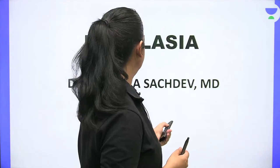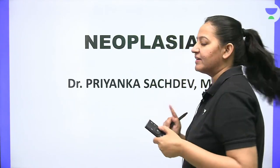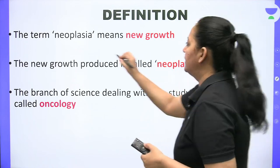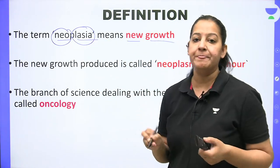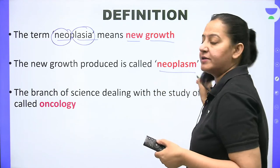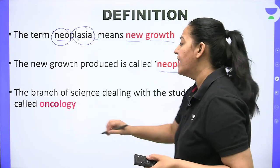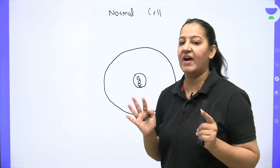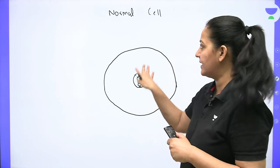Let me start with neoplasia, a very important topic for university exams with many MCQs. The first thing is the definition. Neoplasia means new growth — 'neo' means new, 'plasia' means growth. It is a new growth anywhere in the body. The new growth formed is known as a neoplasm or tumor. It can be of two types: benign or malignant. The branch of science dealing with neoplasia is known as oncology.